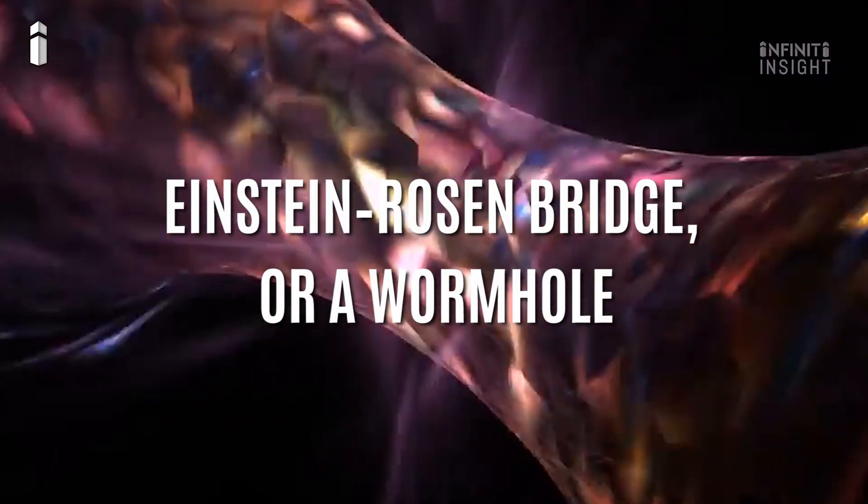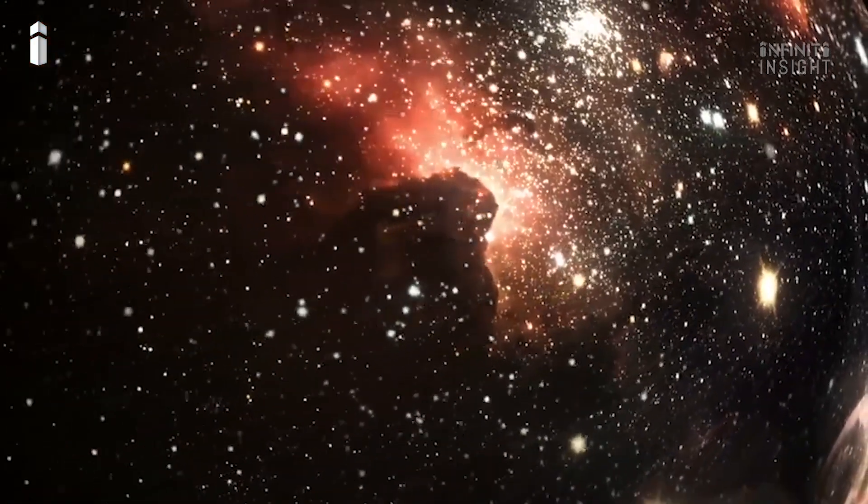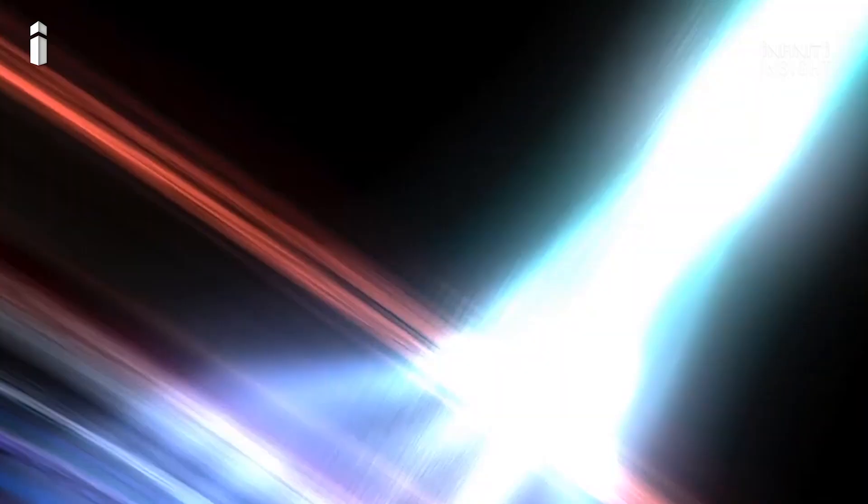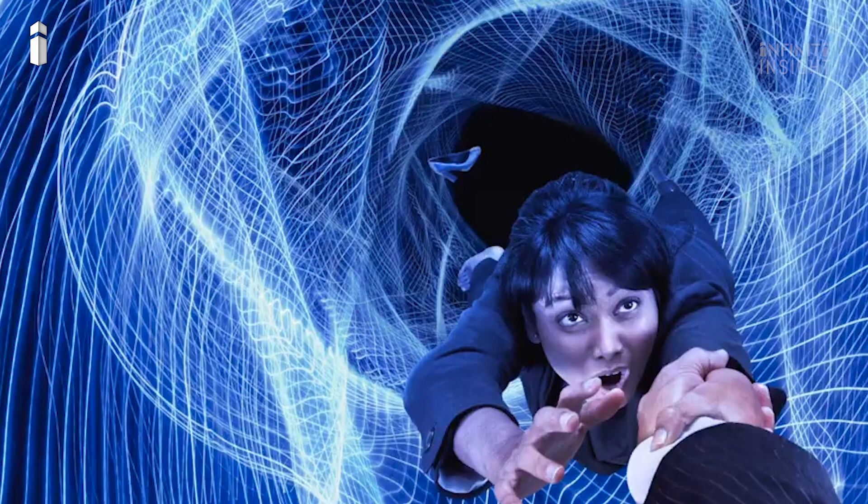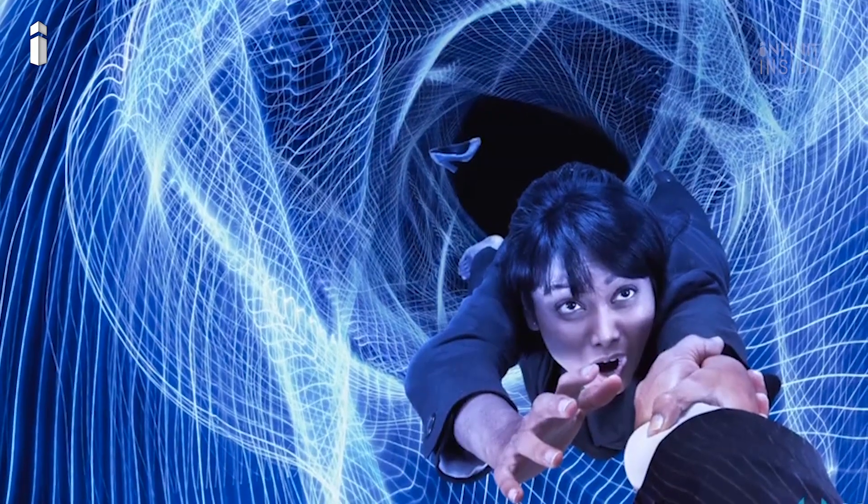Einstein-Rosen bridge, or a wormhole, is also a shortcut through space-time. That could link up black holes light years apart. And if you were to pass through it, you could end up in a different galaxy, a different universe. But only if you found a way to keep the wormhole from collapsing on you.